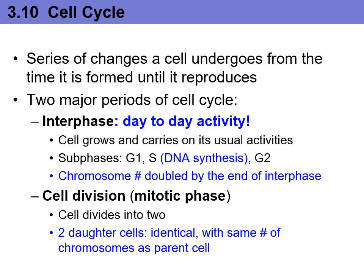The cell cycle is basically a series of events or phases that each cell will go through as it grows, functions, and eventually starts to reproduce. When you look at the cell cycle, we basically have two major events to discuss. The first one is called interphase, and this is when the cell is doing its day-to-day activities. It is subdivided by G1, S, and G2. The S phase is where you have DNA synthesis, and the goal of the S phase is to double the DNA that the cell starts off with.